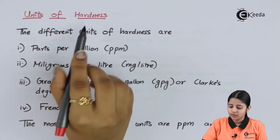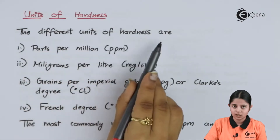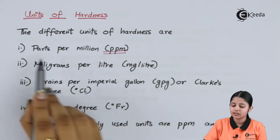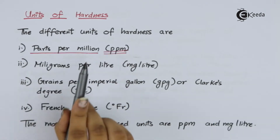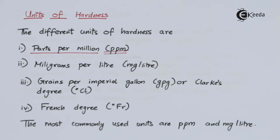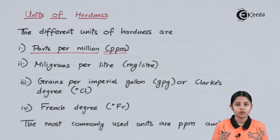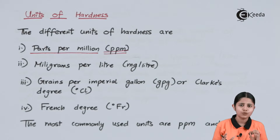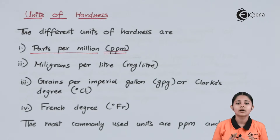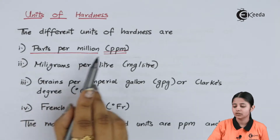Units of hardness. The different units of hardness are: the first one is known as PPM, that is parts per million. PPM is one of the most important units and most concentrations due to the hardness of water are measured in PPM. If I have a million parts of water out of which 50 parts is Ca+ ions, that means the hardness of the water will be 50 PPM. That is the exact meaning of parts per million or PPM.